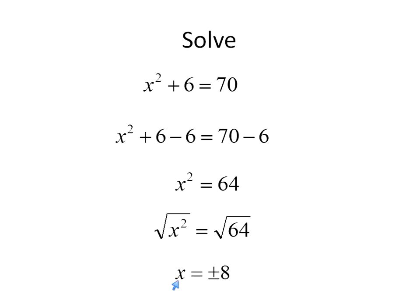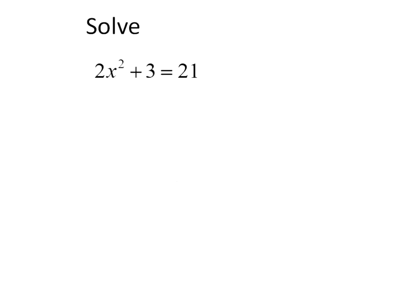We can check our work by plugging the values of plus and minus 8 back into the original equation. And solve and see if that gives us the answer. 8 squared is 64 plus 6 is equal to 70. Negative 8 squared gives you positive 64 plus 6 is equal to 70. So that works.